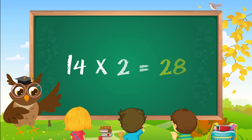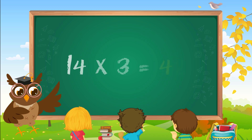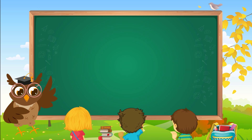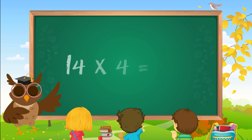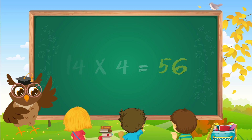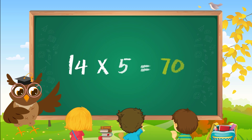14 twos are 28. 14 threes are 42. 14 fours are 56. 14 fives are 70.